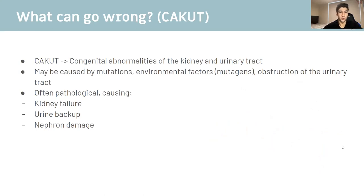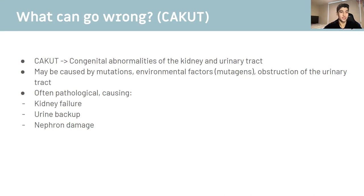So what can go wrong? If there are any abnormalities in development, it can give rise to what we call CAKUT — congenital abnormalities of the kidney and urinary tract. These may be caused by mutations, environmental factors (mutagens), or obstruction of the urinary tract. This will often be pathological and cause symptoms or require treatment, as it may result in kidney failure, urine backup, or nephron damage if untreated.